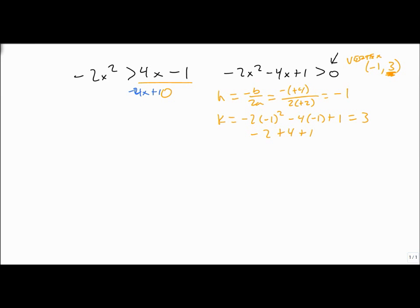My x-intercepts, though, come from this. So the x-intercepts, we take minus 2x squared minus 4x plus 1 equals 0. And notice that this doesn't factor. There aren't any factors of minus 2 that add up to minus 4. So we go straight to the quadratic formula.